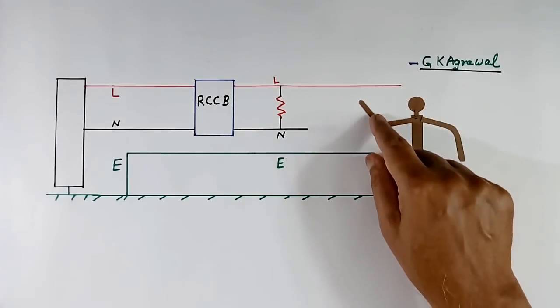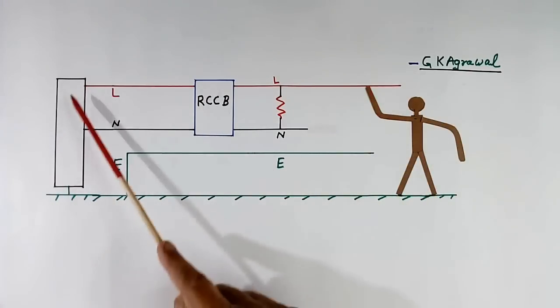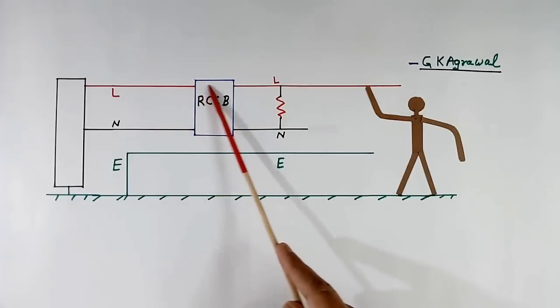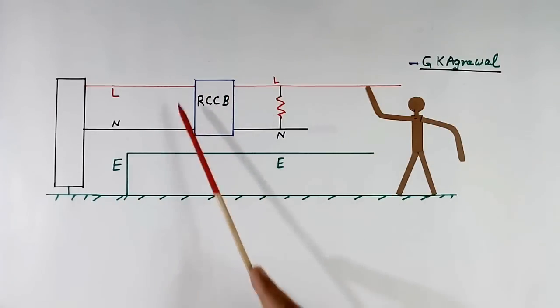Now suppose somebody touches line. Then current will flow like this, and we will get the shock. But because current what is going here is not coming back, it is coming back through earth, so this RCCB will trip and it will protect us.